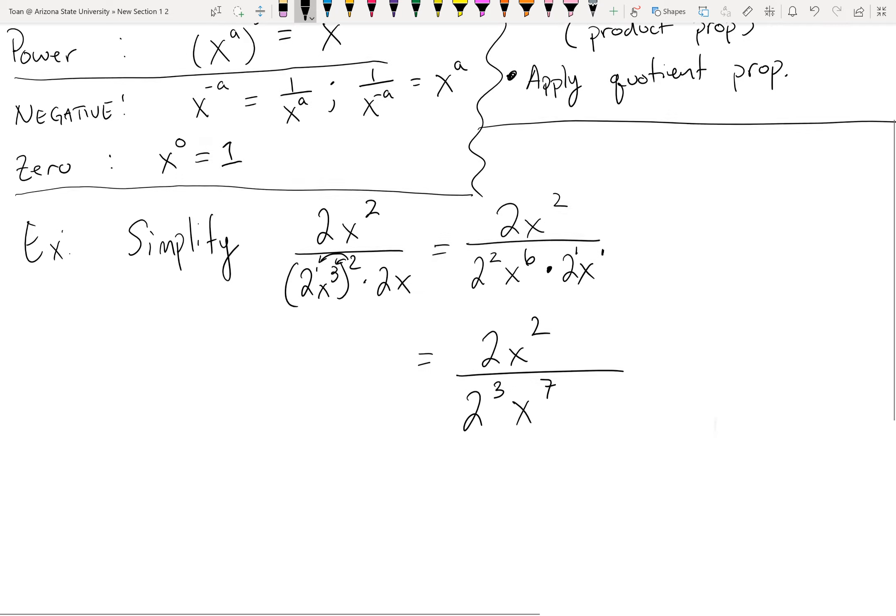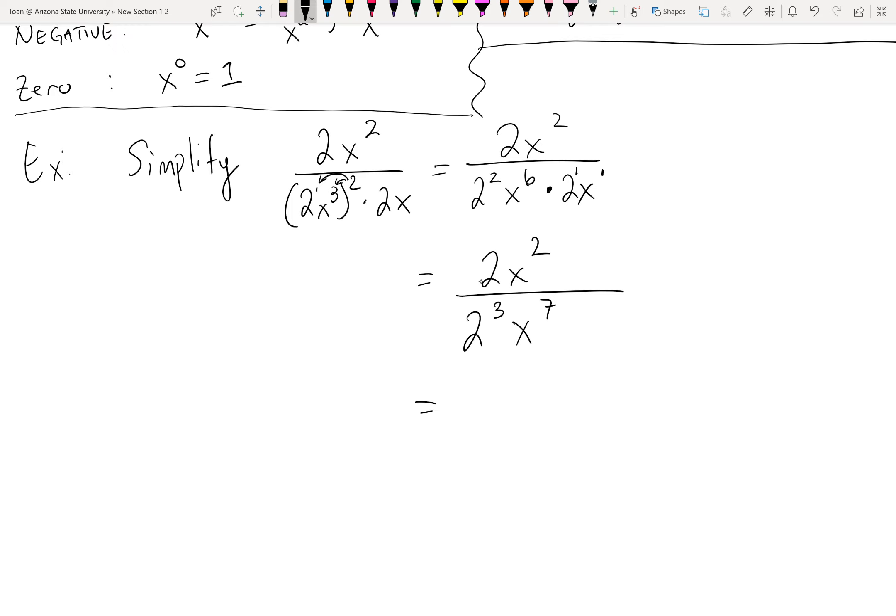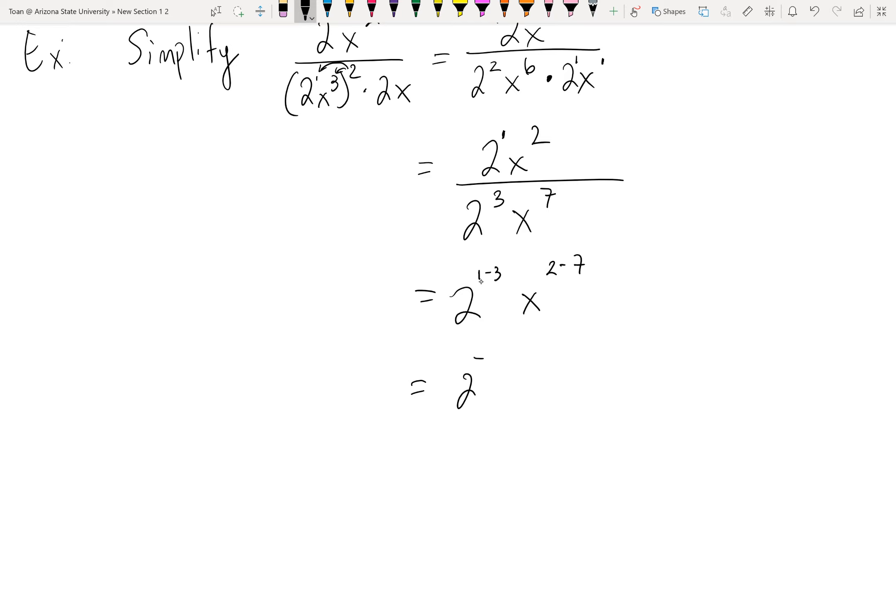So now that we've simplified the numerator and denominator separately, we can go ahead and use the quotient property. Again, you only look at the like bases. Anything that you don't see having an exponent, there's always a 1 there. So according to the quotient property we subtract the exponent - top minus bottom. I'll just go ahead and show my work for our notes here. So for the 2 we have 1 minus 3 in the exponent, and for the x we have 2 minus 7, which gives us 2⁻² x⁻⁵.